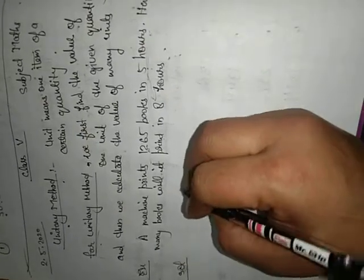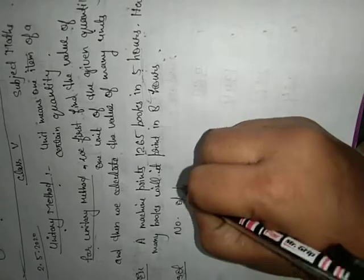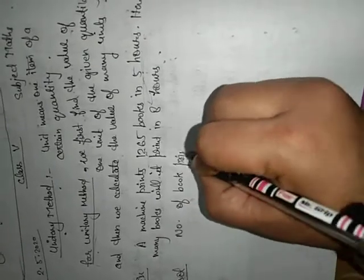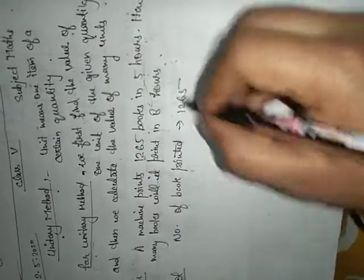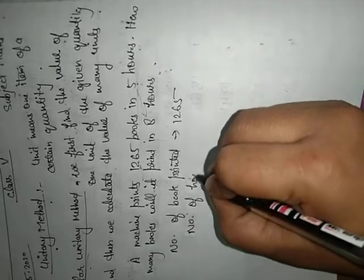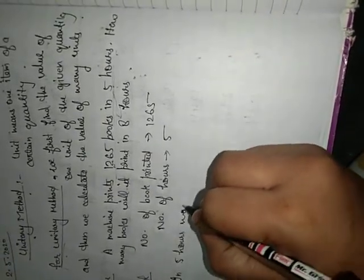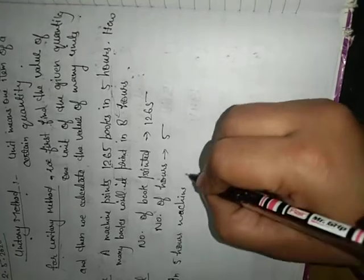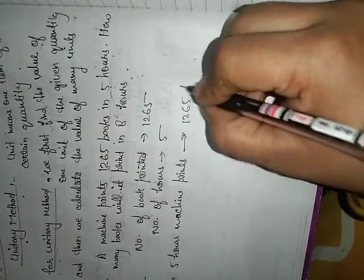So we will find first, number of books printed from machine is 1,265 and number of hours is 5. It means in 5 hours, machine prints 1,265 books.